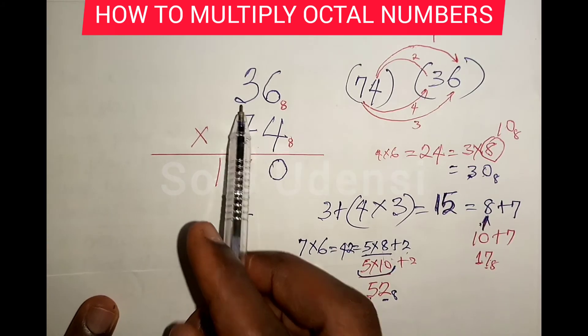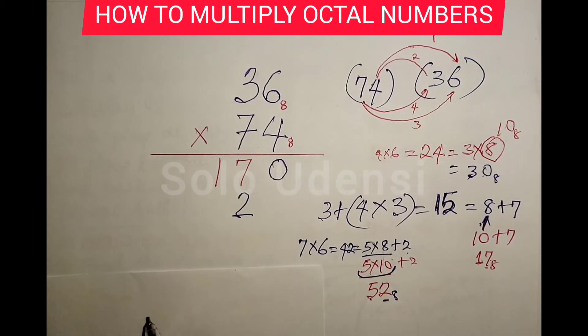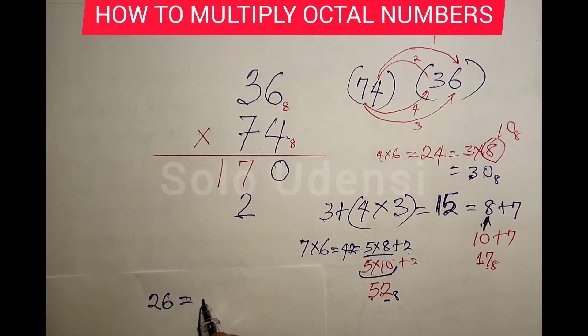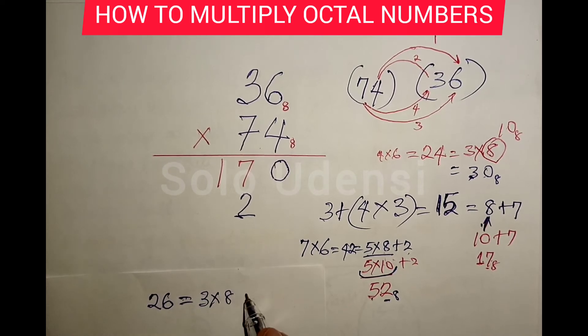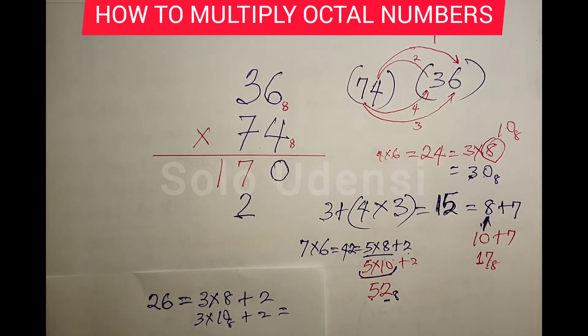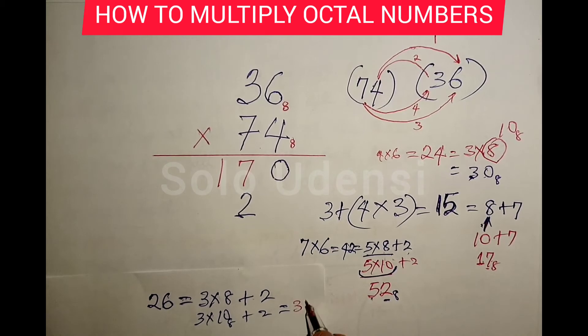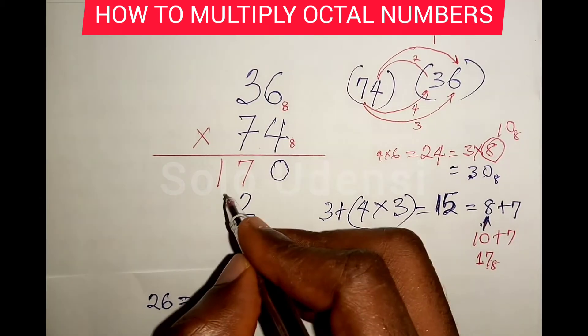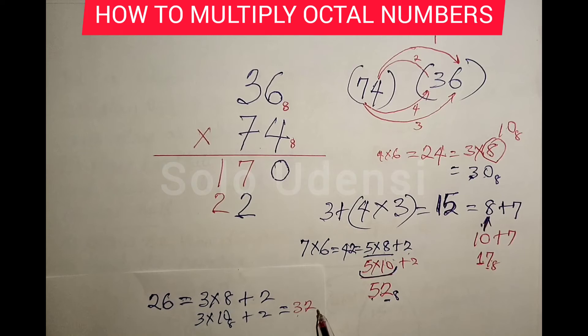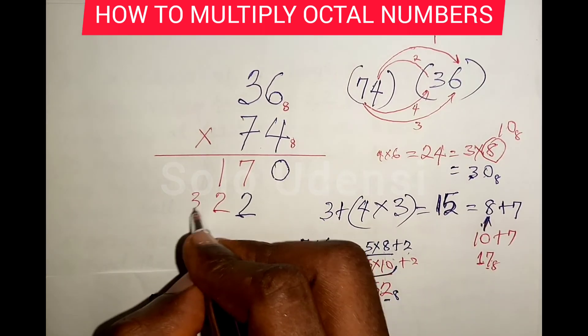Seven times three is twenty-one plus five. Twenty-six is three times eight plus two. Three times eight is twenty-four plus two. So it's three times one zero plus two, which equals thirty-two base eight. So we write two here, carry three. Then we write three.